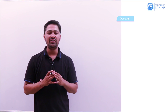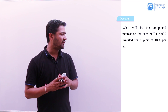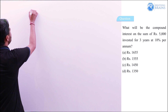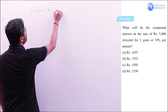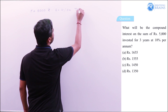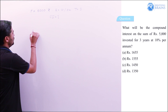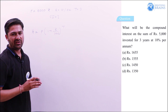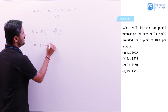The next question: what will be the compound interest on a sum of ₹5,000 invested for 3 years at 10% per annum? Principal is ₹5,000, rate is 10% per annum, and time is 3 years. We use the compound interest formula: Amount = P × (1 + R/100)^T. So Amount = 5,000 × (1 + 10/100)^3.